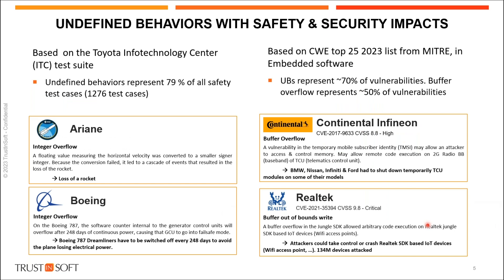This slide shows many various and expensive consequences of undefined behavior. Looking at the MITRE CWE Top 25 — published annually by the cybersecurity organization MITRE — we analyzed last year's list and noticed that undefined behavior represents almost 70% of the vulnerabilities for embedded software. In detail, buffer overflow alone represents almost 50% of vulnerabilities and is the number one vector used by attackers to penetrate software.